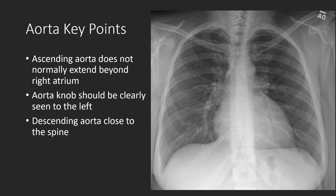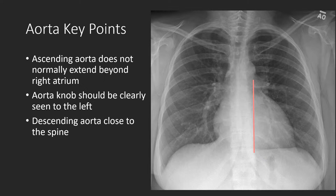Let's first focus on the aorta. The ascending aorta should not normally extend beyond the lateral border of the right atrium — its contour should be more medial or closer to the spine. The aortic knob should be sharply defined, smoothly round, and to the left of the trachea, which often has a subtle indentation from the aortic arch. The descending thoracic aorta is normally closely opposed to the spine and has a uniform and straight course. In older age, we can sometimes see the descending aorta bow off the spine, which could be a manifestation of decreasing height or systemic hypertension.